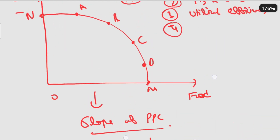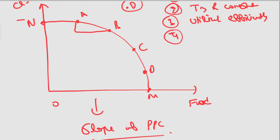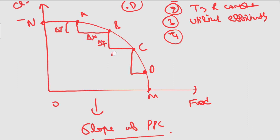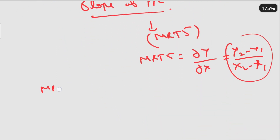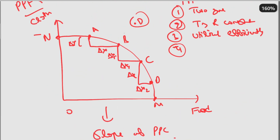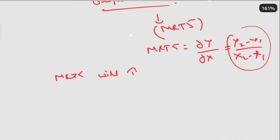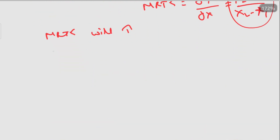If a country moves from A to B, B to C, and C to D, we observe the change in Y and change in X at each step. The Production Possibility Frontier suggests that the Marginal Rate of Technical Substitution increases as we move along the curve. As a country moves from point A to B to C or D, the marginal opportunity cost will increase.